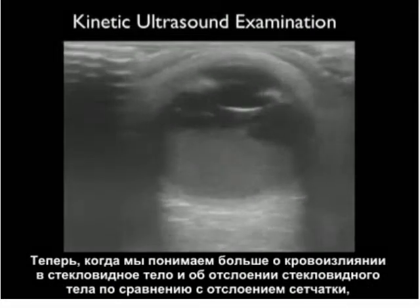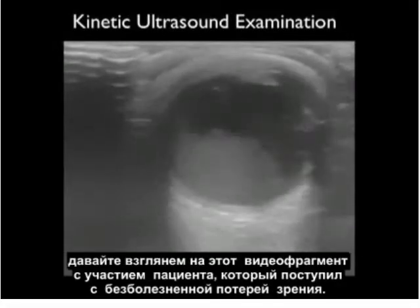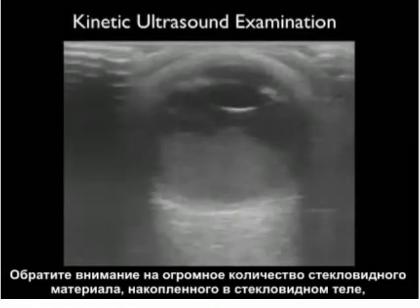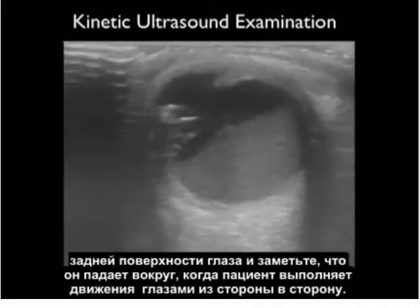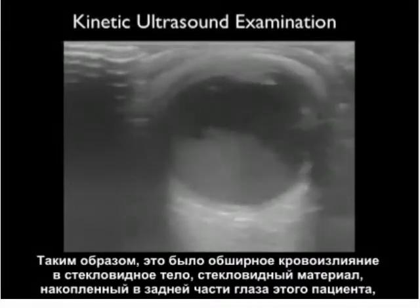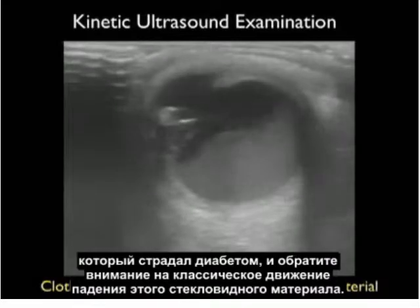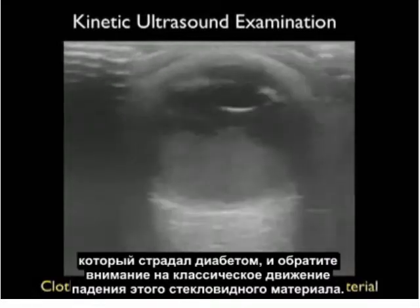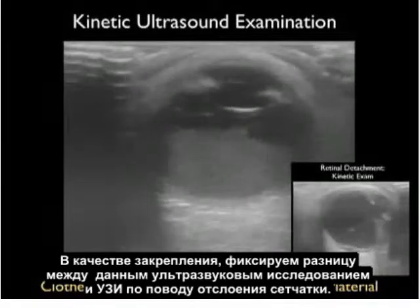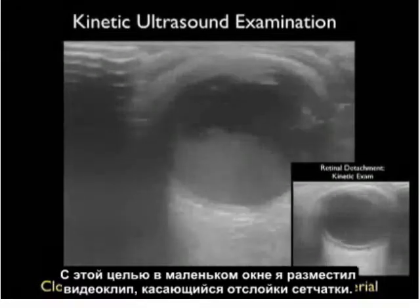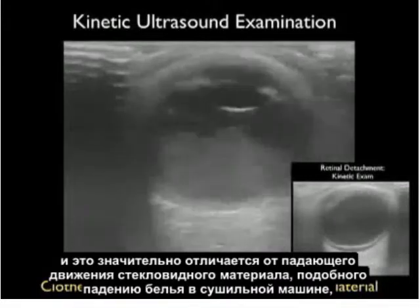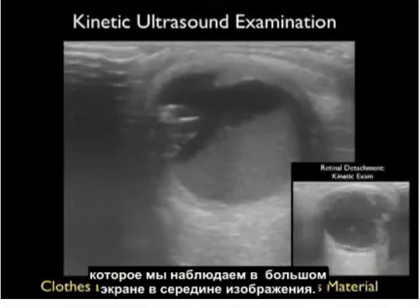Now let's look at a patient who presented with painless loss of vision. Note the huge amount of vitreous material accumulated within the vitreous body. Notice that it tumbles around as the patient looks from side to side — this was a massive vitreous hemorrhage in a diabetic patient, showing the classic clothes-dryer tumbling motion. In the small inset box, the retinal detachment clip shows the tethered membrane appearance as the patient looks from side to side — very different from the tumbling motion of vitreous material.